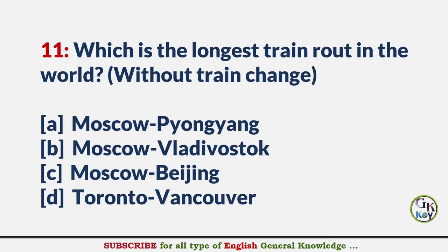Which is the longest train route in the world without a train change? Answer A: Moscow to Pyongyang.